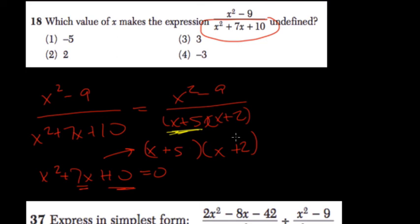The same is true with negative 2. If we plug that into this term, we would get the whole denominator being 0, and it would be undefined. So our choices are negative 5 and negative 2.